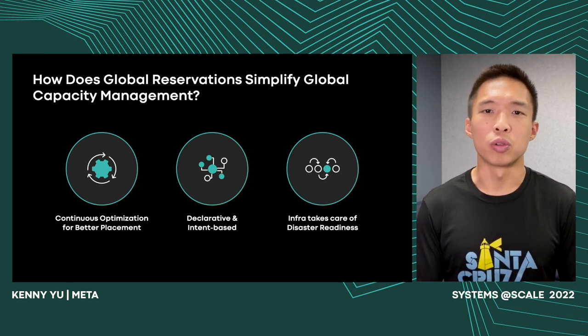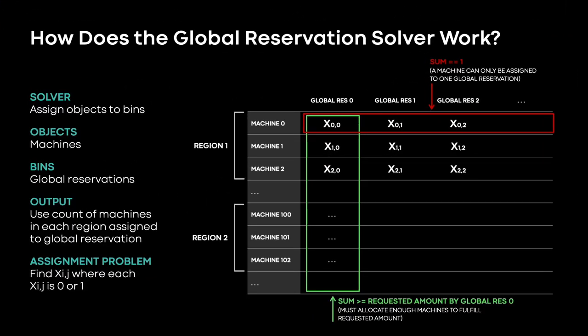Now let's dive deeper into how global reservations work. At the core of the global reservation service is a solver for an assignment problem, where we assign objects to bins. In our case, the objects are machines and the bins are global reservations. The table on the right visualizes this: each row corresponds to a machine, each column corresponds to a global reservation, and each entry has an assignment variable x, which is either 0 or 1, indicating if that machine is assigned to that global reservation. The variables in the red row must sum to 1, meaning a machine can be assigned to exactly one reservation. The variables in the green column must sum to be greater than or equal to the amount requested, indicating we must assign enough machines to fulfill the service owner's request. The solver figures out the assignment to satisfy all constraints and optimize for various goals.